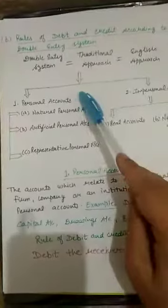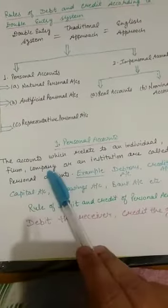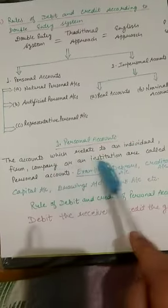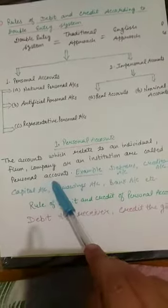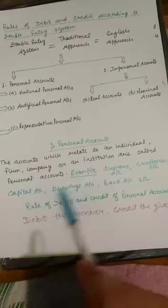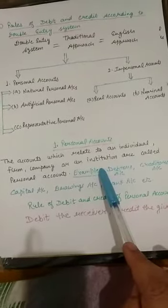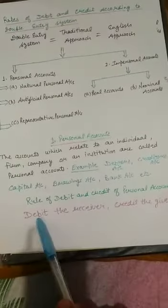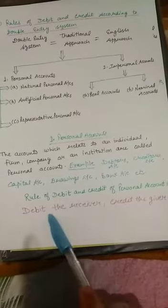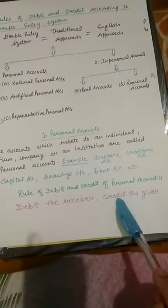First is the personal account. The accounts which relate to an individual, a company, or an institution are called personal accounts. For example, any debtor — Ram, Sham, Mohan — creditors account, capital account, drawings account, bank account. The rule for personal account is the first golden rule: debit the receiver, credit the giver. Whoever receives will always be debited, and whoever gives will always be credited.